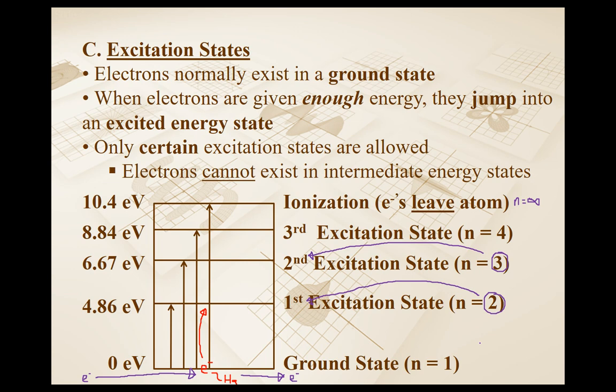In summary, electrons are normally in the ground state at zero electron volts — it doesn't mean they have no energy, just a reference amount. If you give them enough energy to reach one of the excitation states, they'll jump up. We don't know what state it's going to jump to. If we fire in an electron with 10.0 electron volts of kinetic energy, the mercury electron could jump to the first, second, or third excitation state — it's all probability based.